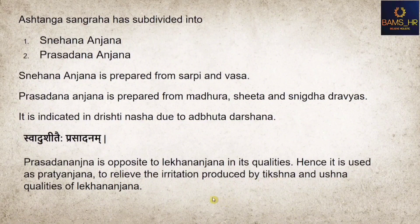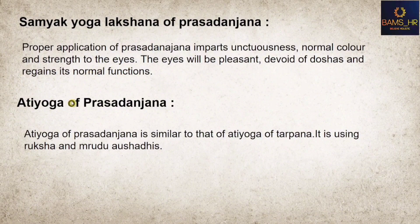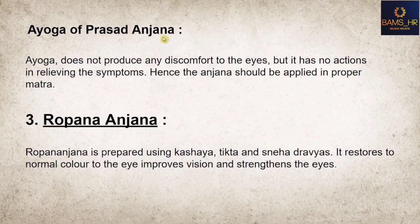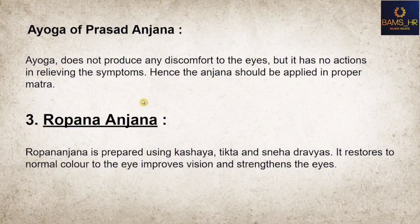Samyak Yoga Lakshana of Prasadhanjana: Proper application imparts normal color and strength to the eyes, makes them pleasant, divides doshas, and restores normal functions. Atiyoga (excess application) of Prasadhanjana is similar to Atiyoga of Tarpana — treated with Ruksha and Mrudu measures. Ayoga (insufficient use) of Prasadhanjana does not produce discomfort to the eyes but has no action in relieving the symptoms. Anjana should always be applied in proper matra.